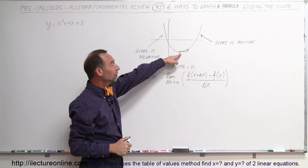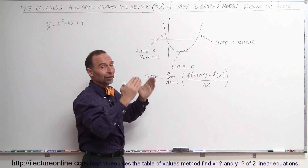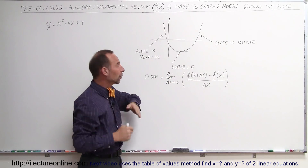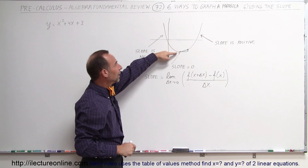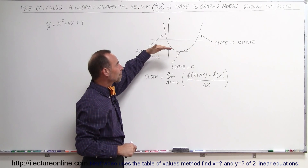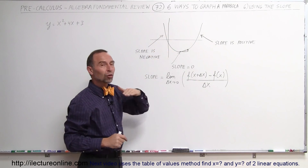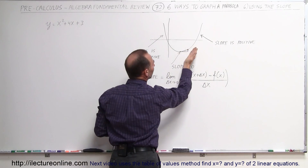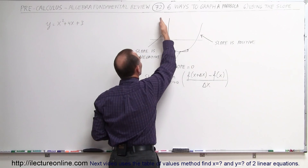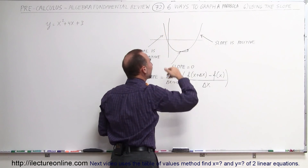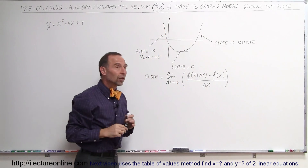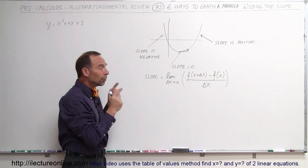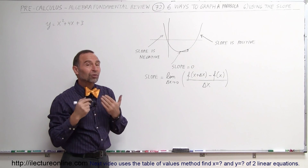We realize that at the vertex — at the very bottom or at the very top, depending upon which way the parabola opens — the slope is equal to zero at that very point. To the right the slope is positive. To the left the slope is negative, but constantly changing. So we recognize that we can find the vertex if we find the point on the parabola where the slope is equal to zero.